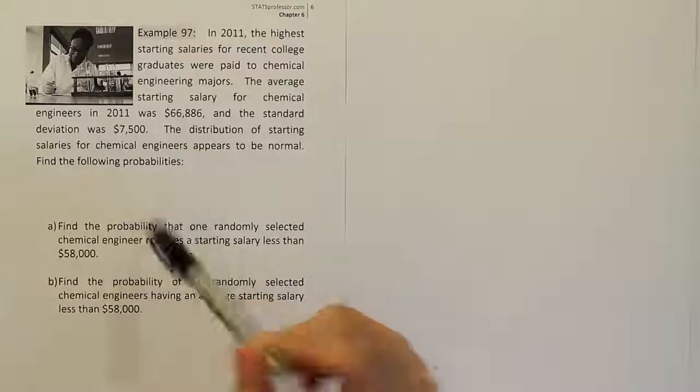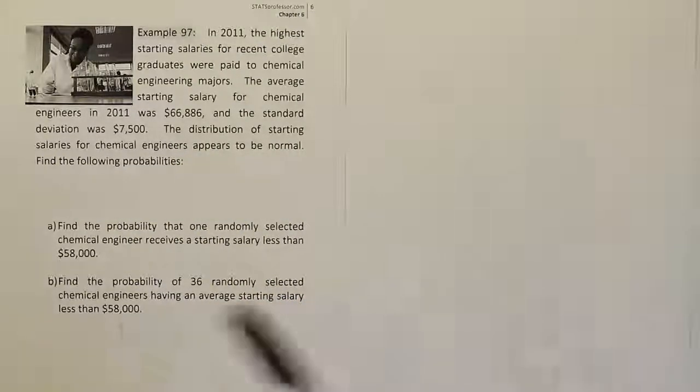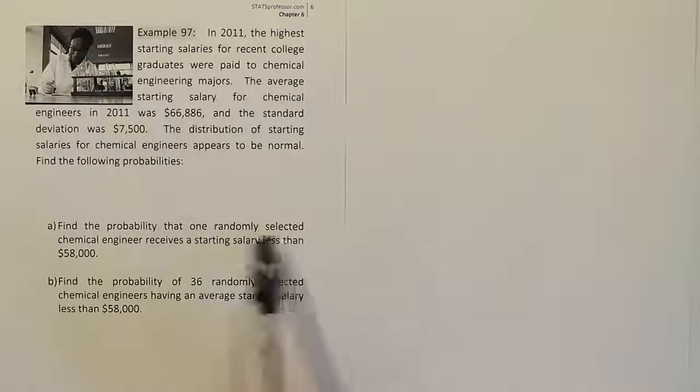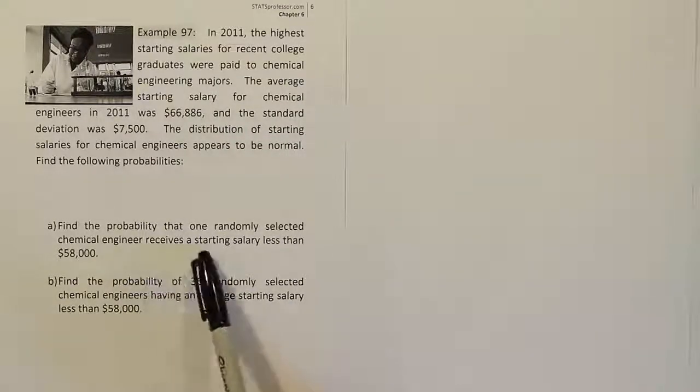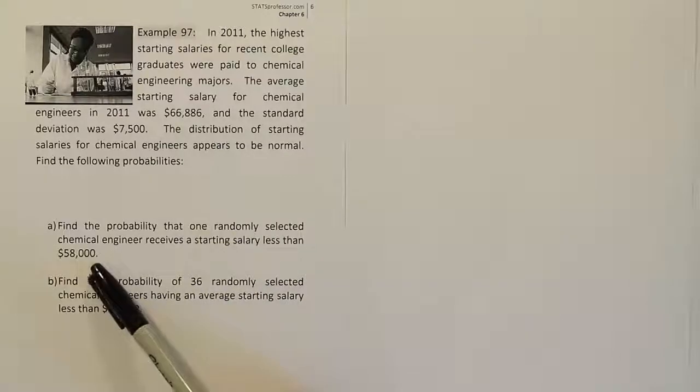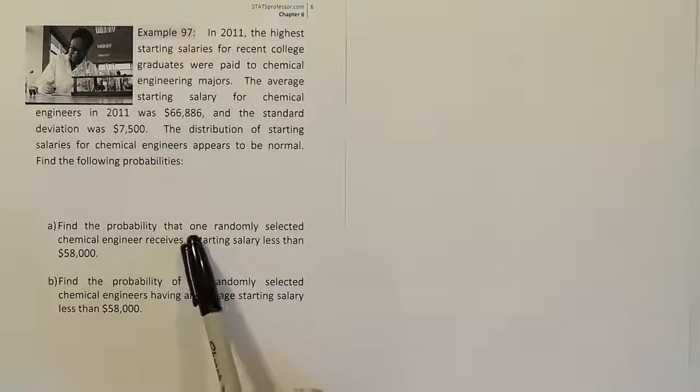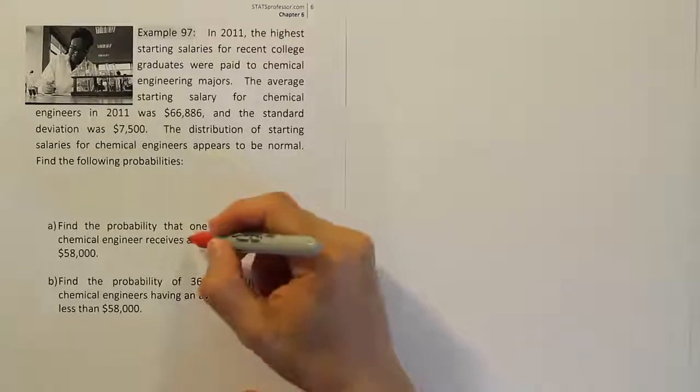Find the following probabilities. Part A says find the probability that one randomly selected chemical engineer receives a starting salary less than $58,000. This is important, this one randomly selected. Let's pay attention to that because I want to distinguish that from part B.